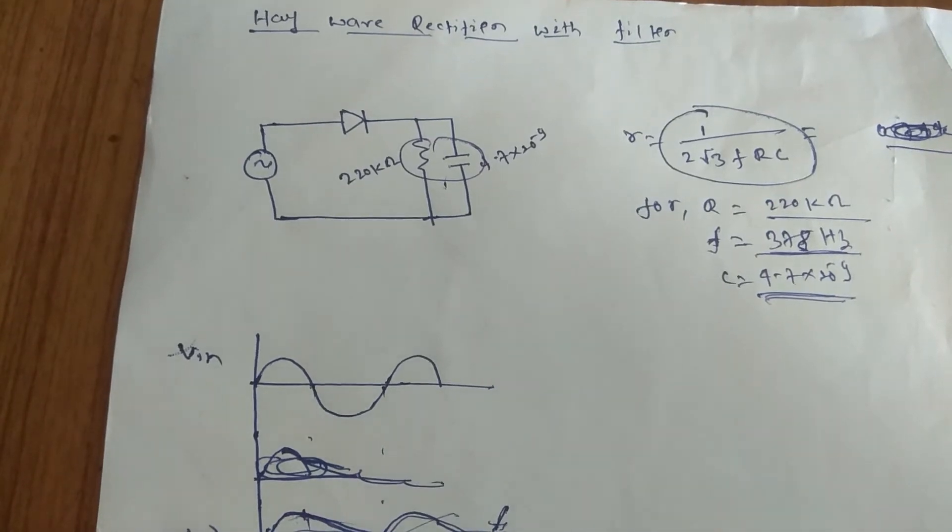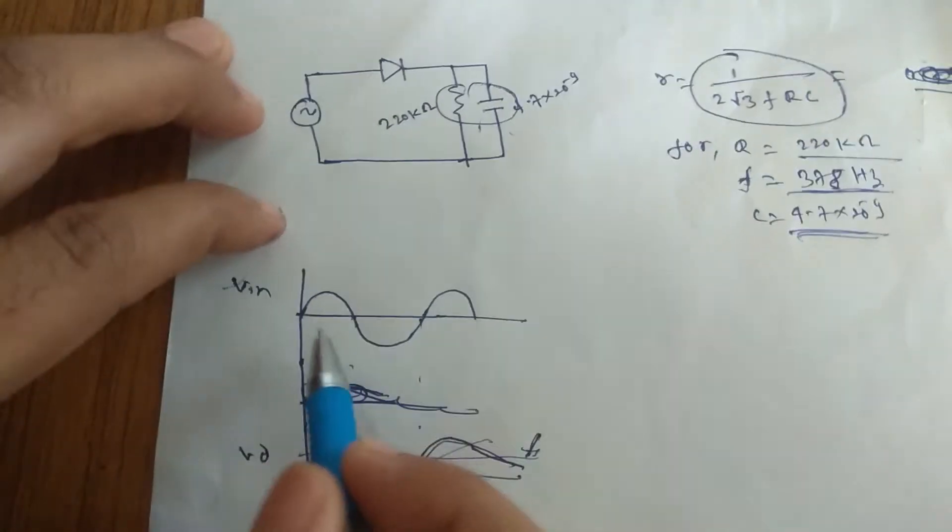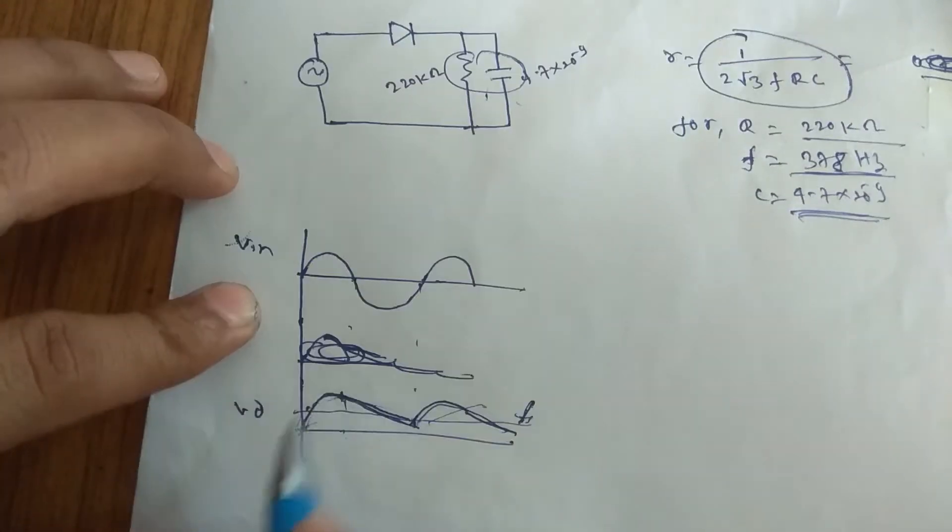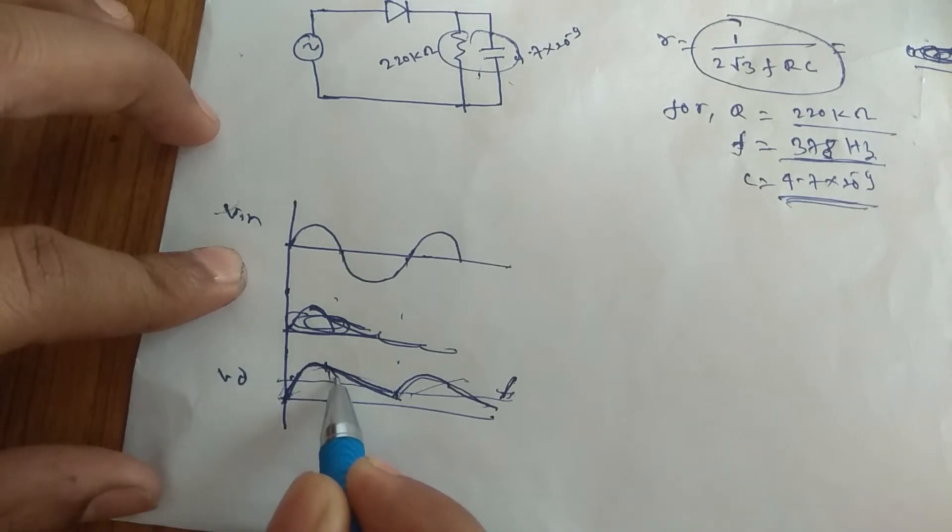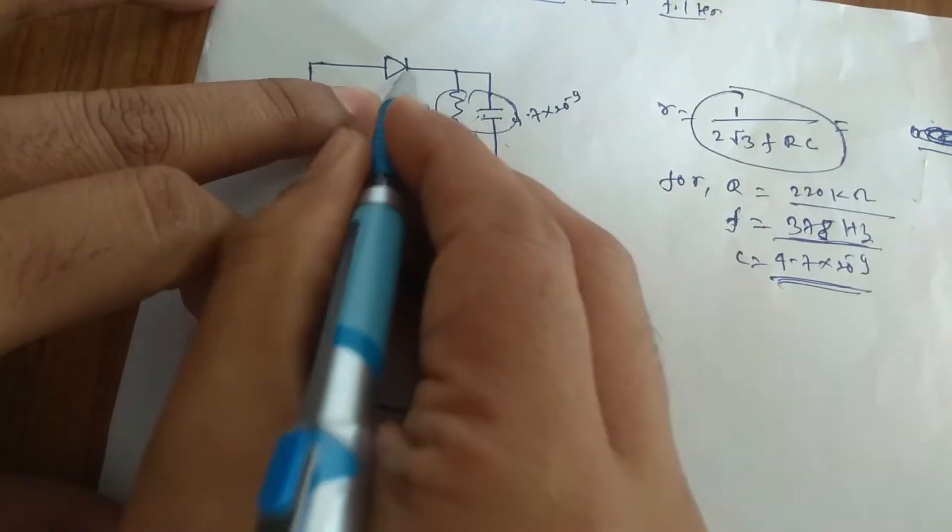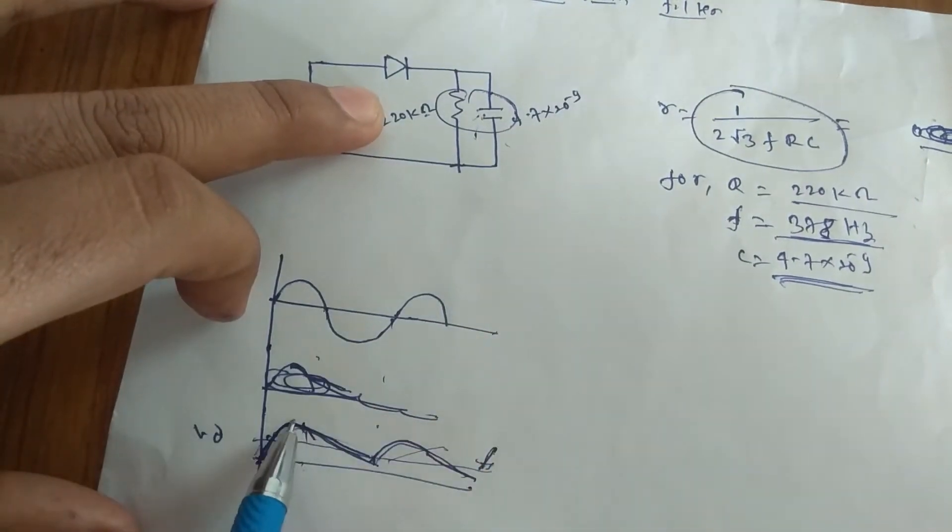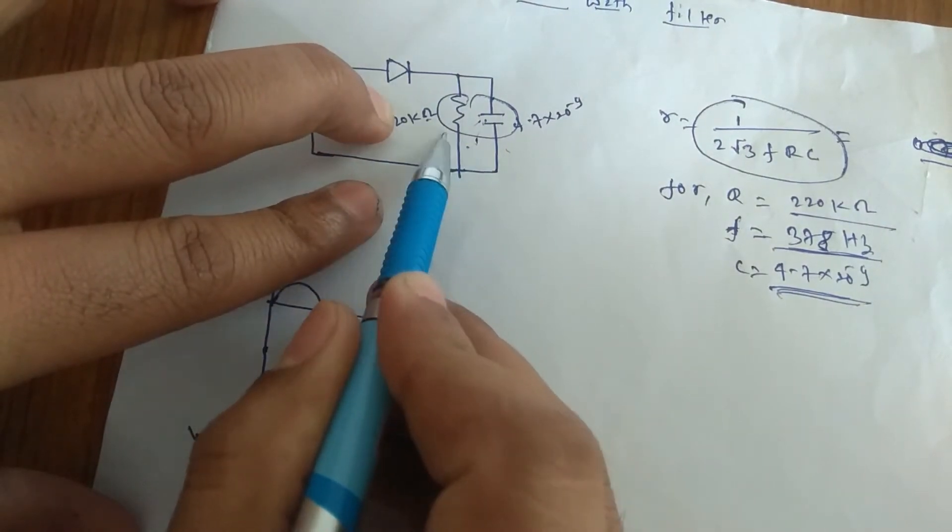Today we are going to see the half wave rectifier with the filter. This is your half wave rectifier with a filter applied. If I apply the input this way, you are going to get the output this way. It will start to come to zero, but because of the discharging R and C, the capacitor has charged in this cycle. Now when we will be discharging, because the time duration of R and C,